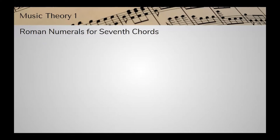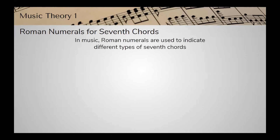Let's talk about the Roman numerals for seventh chords. When we talked about Roman numerals for triads, we used a capital Roman numeral to stand for a major triad, a lowercase Roman numeral for a minor triad, and symbols like the circle or the plus to indicate diminished or augmented triads. For seventh chords it's the same thing — we use capital, lowercase, or a symbol along with the number seven to indicate different types of seventh chords.